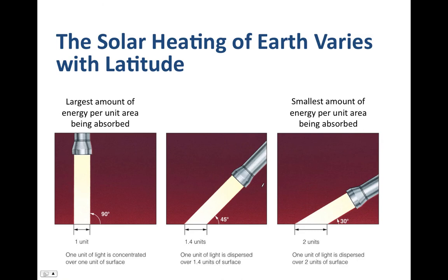Earth's surface receives external energy from the sun in the form of electromagnetic radiation, which strikes the surface and is absorbed — that absorption is what heats Earth's surface. But the angle at which that light hits the surface plays a significant role in how much energy is absorbed per unit area. For example, a flashlight shining straight down intersects the surface at a 90-degree angle, and let's say the area it lights is one unit of area.